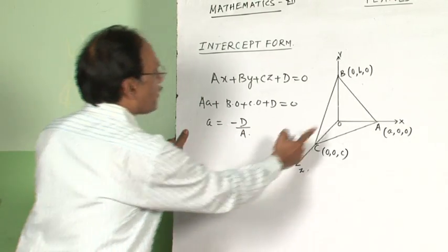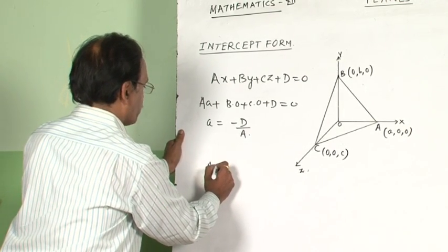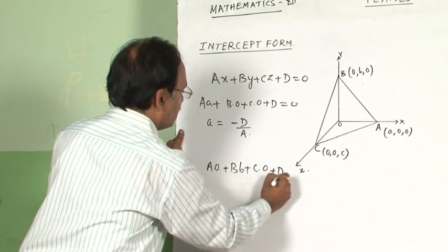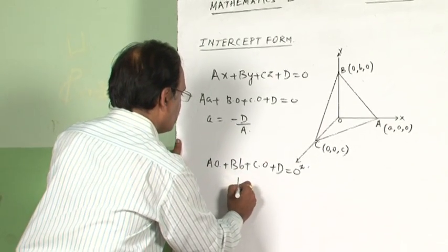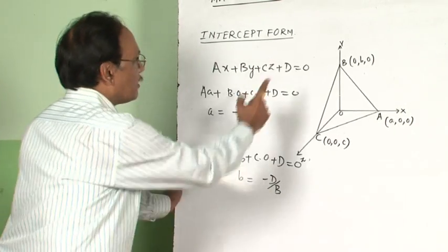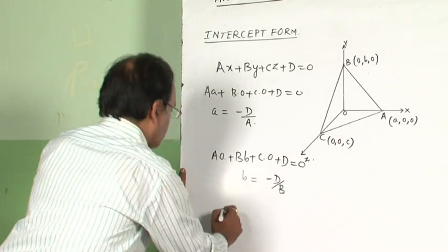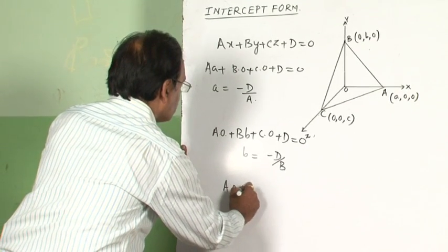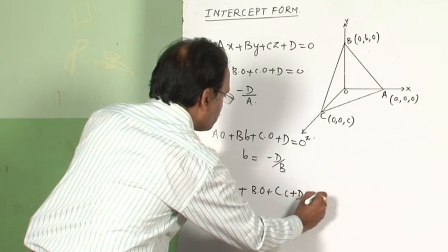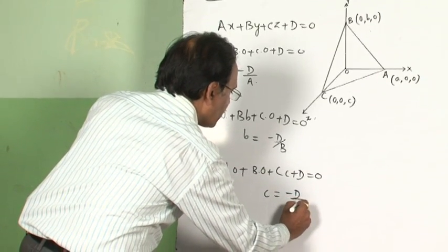Similarly, the plane passes through the point B, so the coordinates of B will satisfy the equation of the plane. So A·0 + B·B + C·0 + D = 0, giving intercept B equal to minus D by capital B. And the plane also passes through the point C, so the coordinates of C will satisfy the equation, giving small c equal to minus D by capital C.